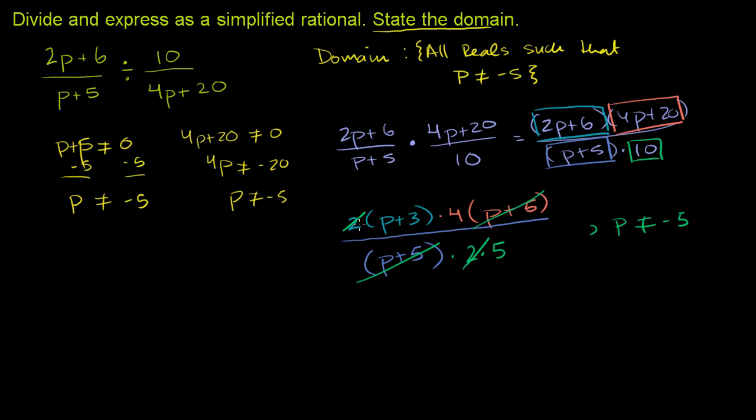So what are we left with? In the numerator, we have 4 times p plus 3, and in the denominator, all we have is that green 5. And we're done. We could write this as 4 fifths times p plus 3, or just the way we did it right there.